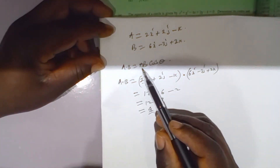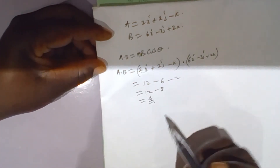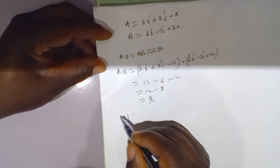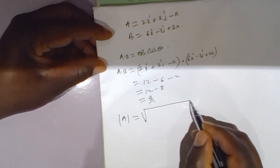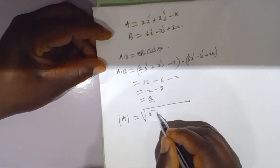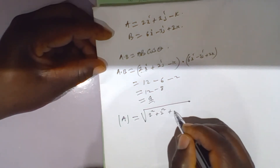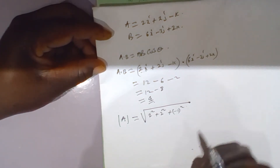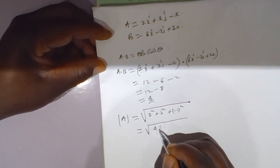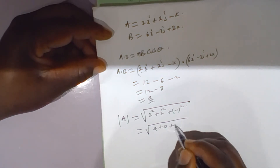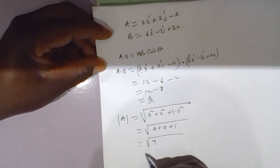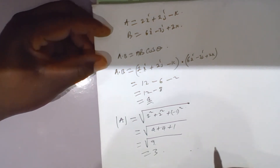Now we have |a||b| cos theta. The modulus of a equals the square root of 2 squared plus 2 squared plus negative 1 squared, which equals the square root of 4 plus 4 plus 1, equals the square root of 9, which equals 3.